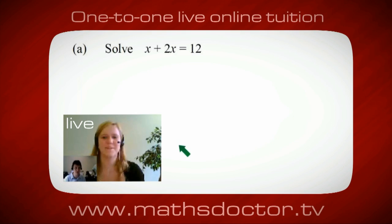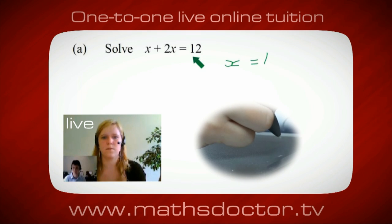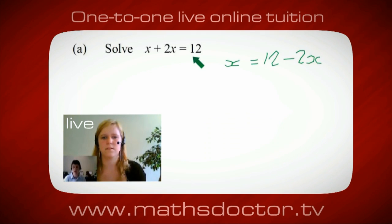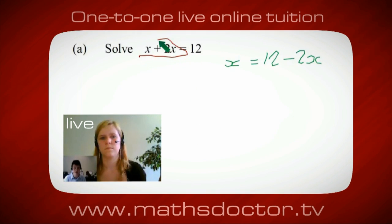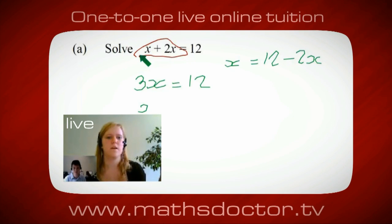Okay Marie, let's have a look at this one. Solve x plus 2x equals 12. So what do you think you do first? Well, I want x on its own, so I would put x equals 12 minus 2x. A lot of the time we want to get x by itself, but what we want to do first is get all the x's together. Can you see anything we can do? Oh, it's 3x, isn't it? Yes, absolutely — so 3x equals 12, and so x equals 4. Brilliant, spot on, well done.